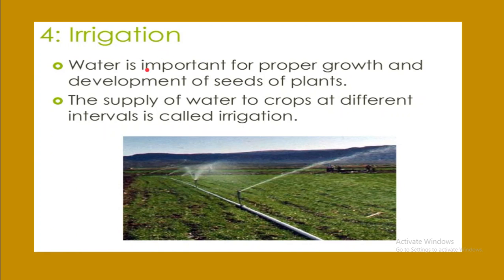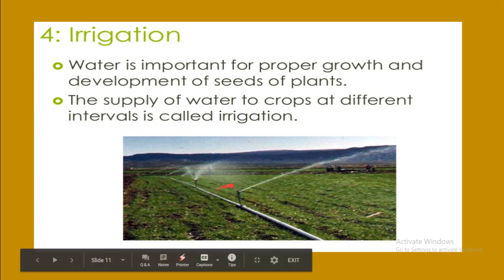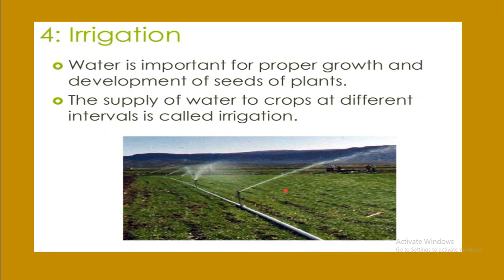The fourth practice is irrigation. Water is important for proper growth and development of plants. The supply of water to crops at different intervals is called irrigation. As shown in the picture, irrigation systems include sprinkling systems and drip systems.